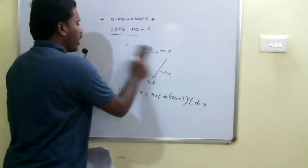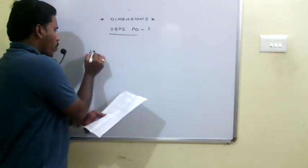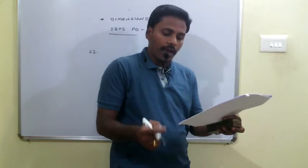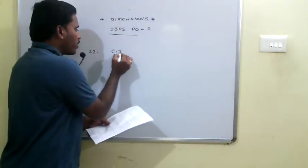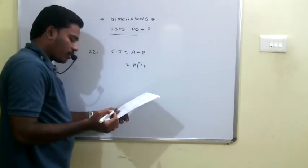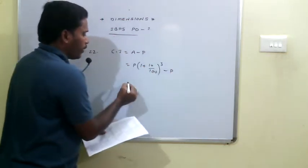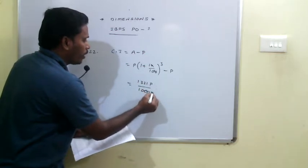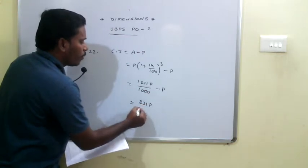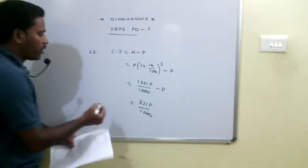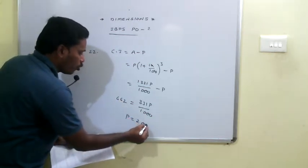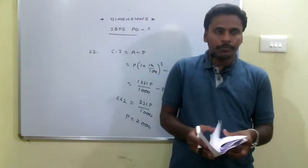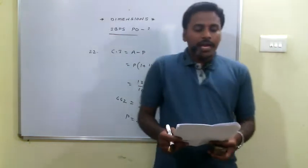Q22: The compound interest on a certain sum for 3 years at 10% per annum is 662. CI = P × (1 + 10/100)³ − P = P × (11/10)³ − P = 1331P/1000 − P = 331P/1000. Since CI = 662, we get 331P/1000 = 662, giving P = 2000. Simple interest = P × R × T / 100 = 2000 × 10 × 3 / 100 = 600.